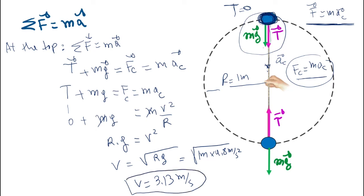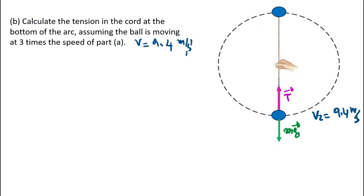For the second question, we find the tension at the bottom when the speed at the bottom V2 equals 3×V1 — that means 3 times 3.13 meters per second. So V2 equals 9.39, or approximately 9.4 meters per second. This is the velocity at the bottom.